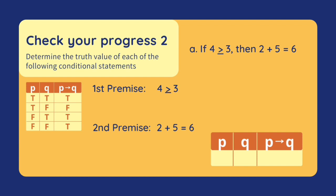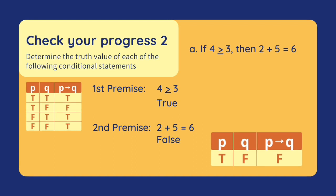Our first premise is '4 is greater than or equal to 3.' This is true because 4 is indeed greater than 3. Our second premise is '2 plus 5 equals 6.' This is false because 2 plus 5 equals 7. Since our antecedent is true and our consequent is false, our conditional is false.